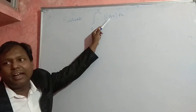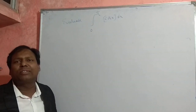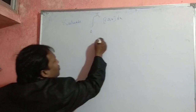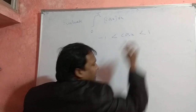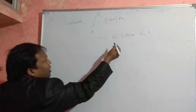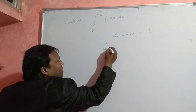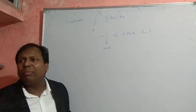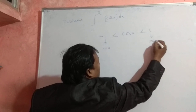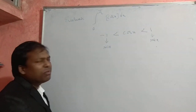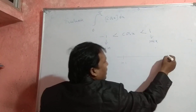Integration from 0 to π/2 of ⌊cos x⌋. We know that the range of the cosine function is -1 < cos x < 1. That means the minimum value of cos x is -1 and the maximum value is +1, so it ranges from -1 to +1.